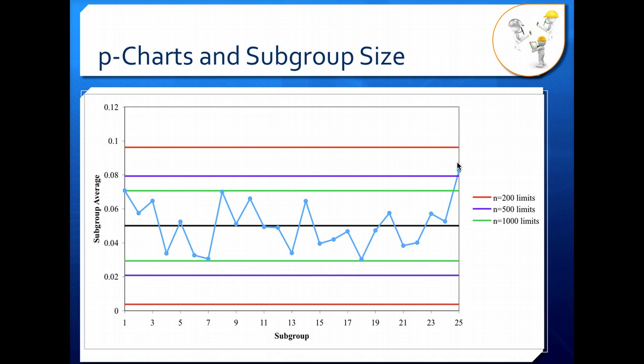In general, p-charts with unequal subgroup size can be a little bit confusing to read, and you need a good understanding of how these charts are actually constructed to properly understand and interpret them. It's easier to understand a chart with equal subgroup size, however, it's not always possible to get a chart with equal subgroup size, and so in this case, we need to take the subgroup size of each point into account so we're getting a correct reading of whether or not our process is in control.